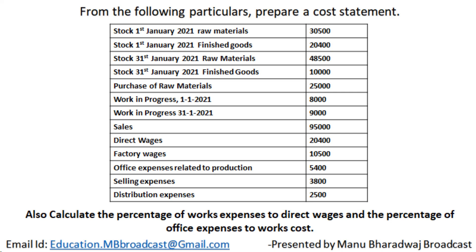Sales is 95,000. Direct wages is 20,400. Factory wages is 10,500. Office expenses related to production is 5,400. Selling expenses is 3,800. Distribution expenses is 2,500. Also calculate the percentage of work expenses to direct wages and the percentage of office expenses to work cost.